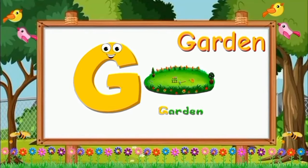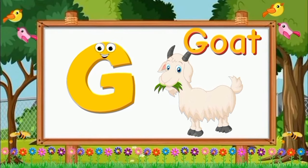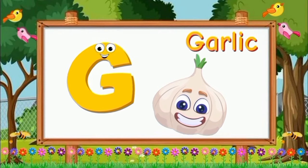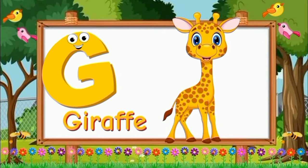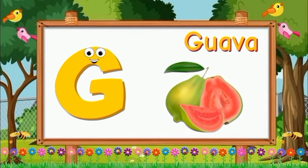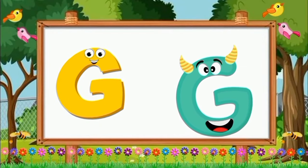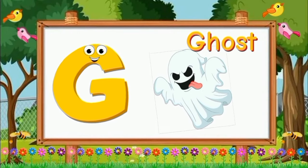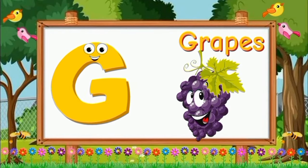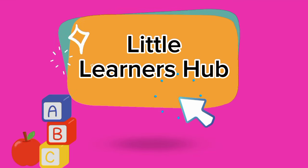G is for Garden. G is for Goat. Goat. G is for Garlic. Garlic. G is for Giraffe. Giraffe. G is for Guava. Guava. G is for Ghost. Ghost. G is for Grapes. Grapes. Please subscribe Little Learner's Hub.